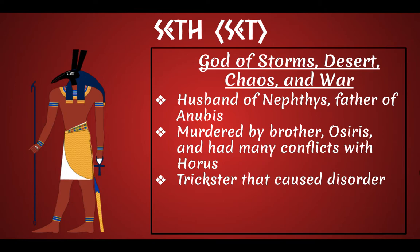Seth — sometimes you'll see it as Set — when I took mythology in school the art teacher called him Seth, so that's what I've been calling him my whole life. He's the god of storms, desert, chaos, and war, so he's kind of a meaner god. He's the husband of Nephthys, also the brother of Nephthys, and the father of Anubis. He will murder his brother Osiris. He also had many conflicts with Horus, who is Osiris's son and Seth's nephew. He's a trickster that causes disorder — that's kind of his thing.